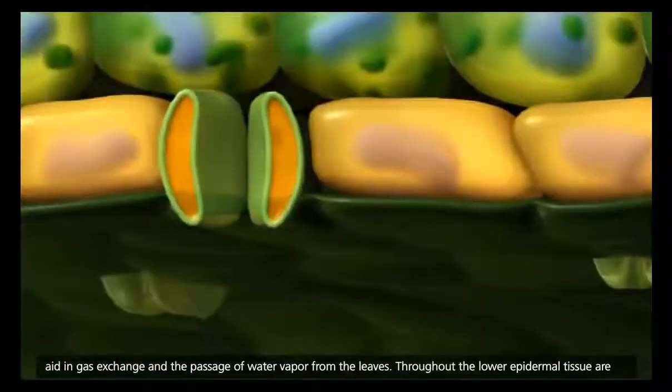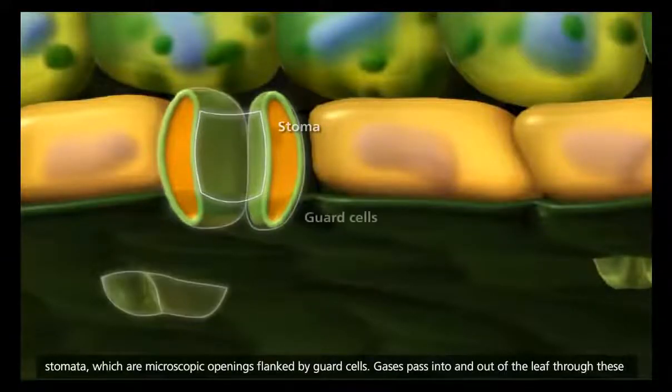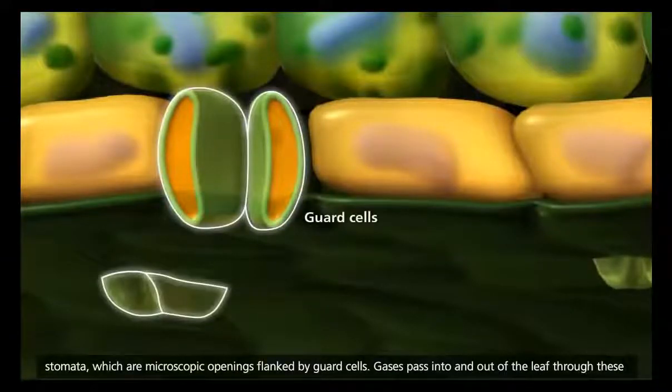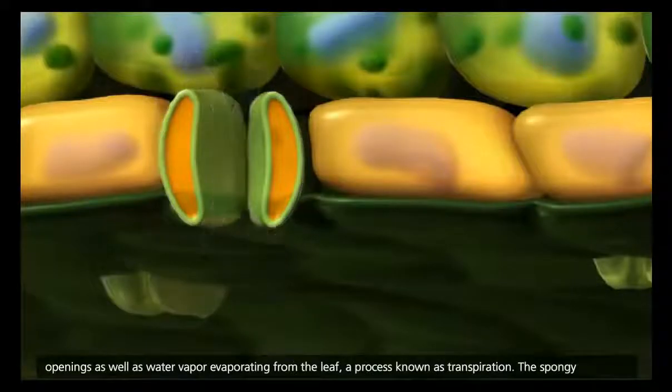Throughout the lower epidermal tissue are stomata, which are microscopic openings flanked by guard cells. Gases pass into and out of the leaf through these openings, as well as water vapor evaporating from the leaf, a process known as transpiration.